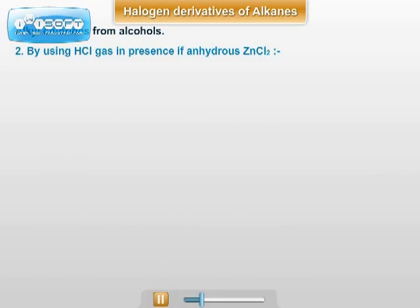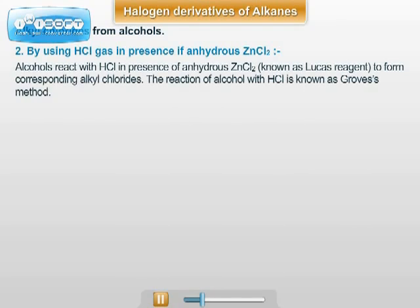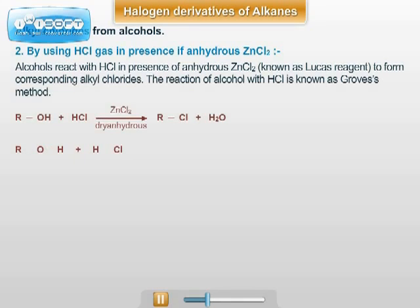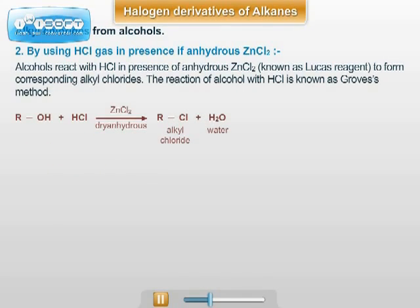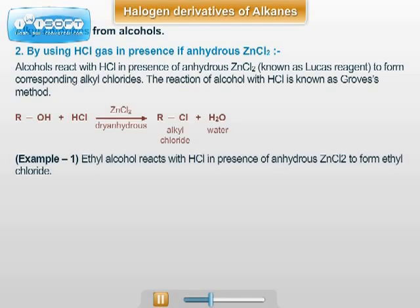By using HCl, alcohols react with HCl in presence of anhydrous ZnCl2, known as Lucas reagent, to form alkyl chlorides. The reaction of alcohol with HCl is also known as Groves method. The general reaction is: alcohol plus HCl in presence of anhydrous ZnCl2 gives alkyl chloride plus H2O. Anhydrous ZnCl2 is used to remove or to absorb the water which is formed as a byproduct during the reaction.